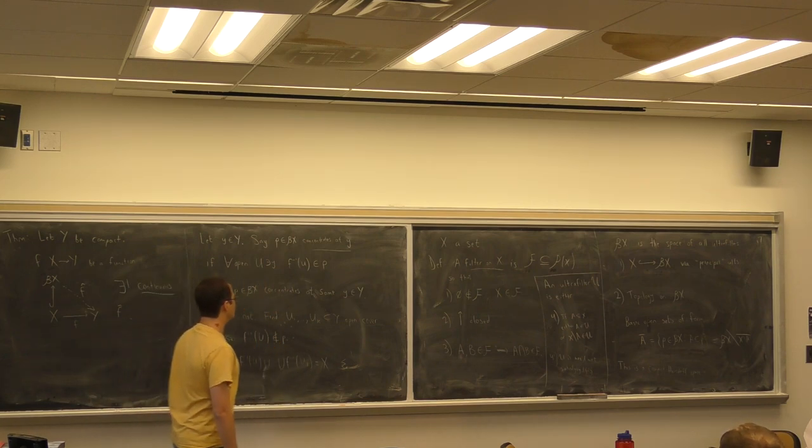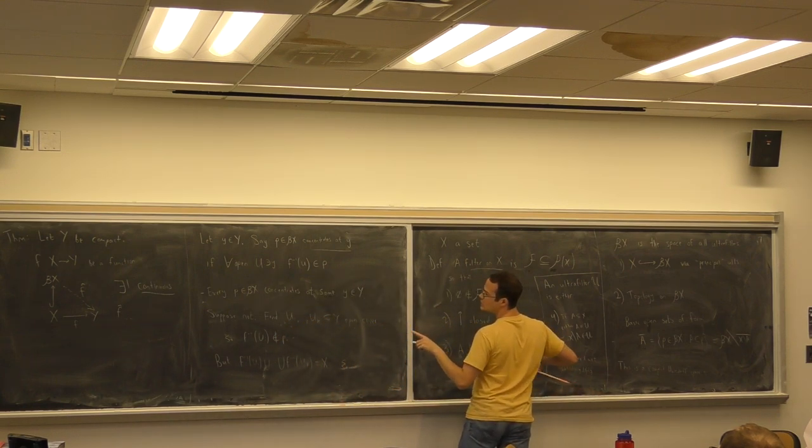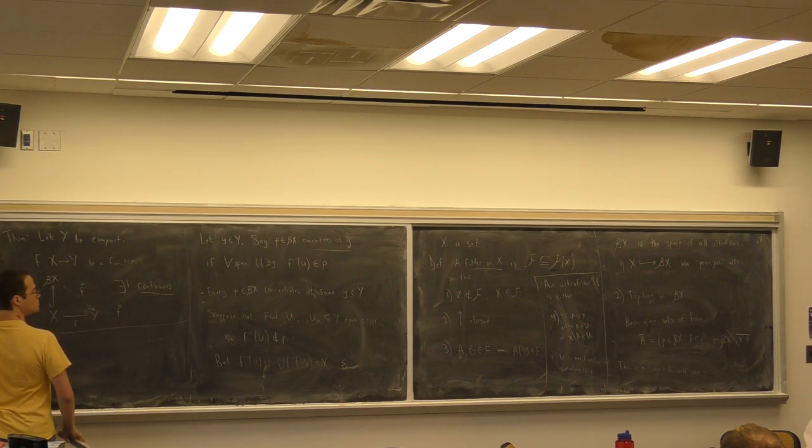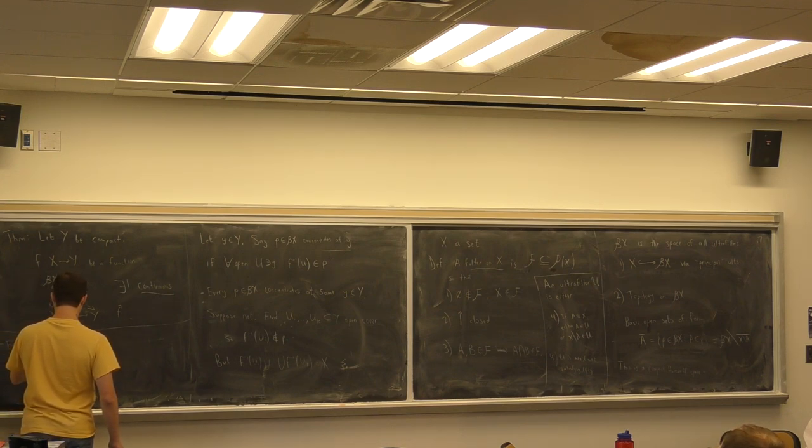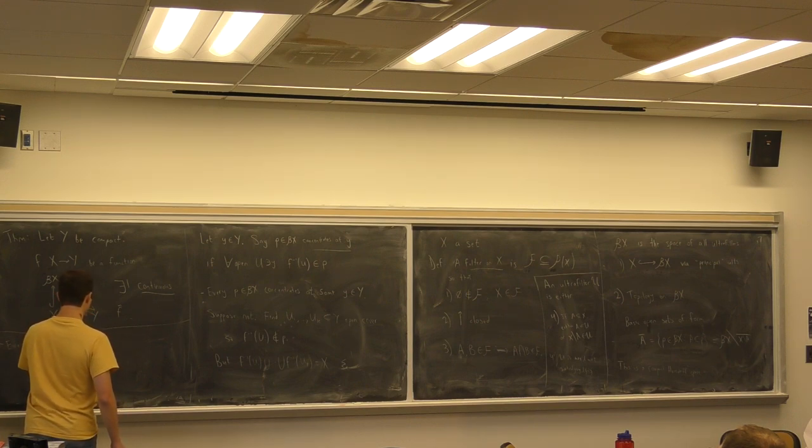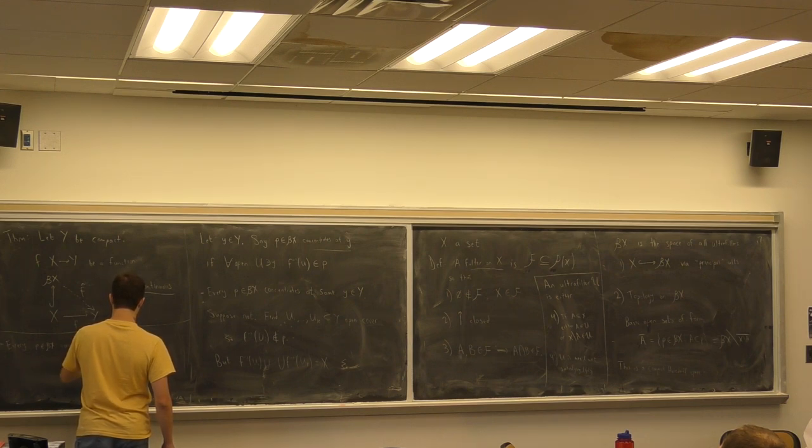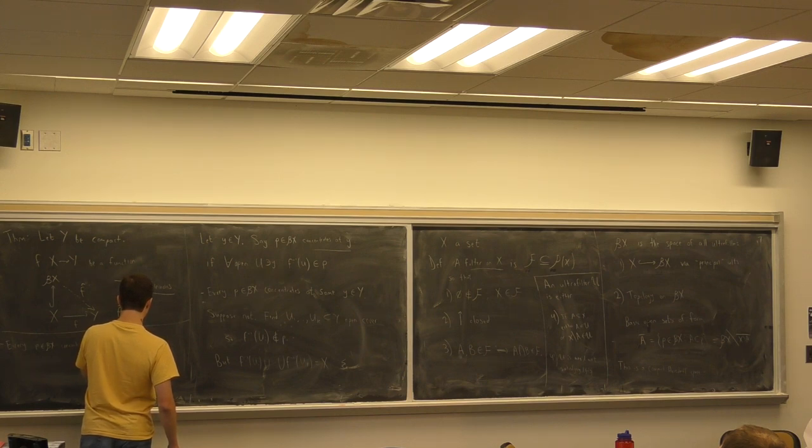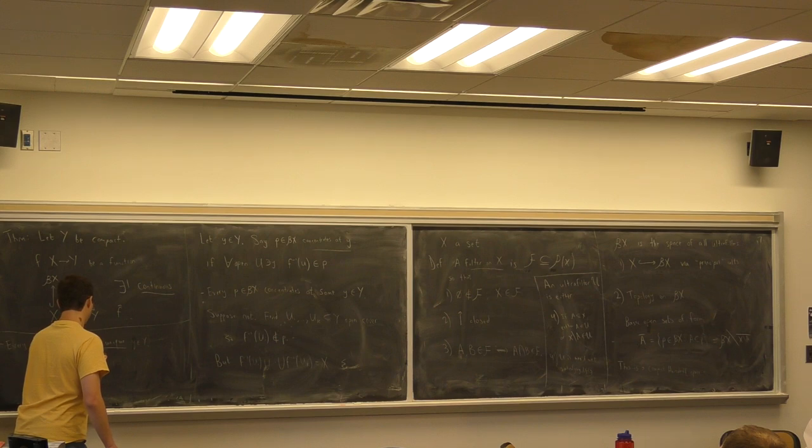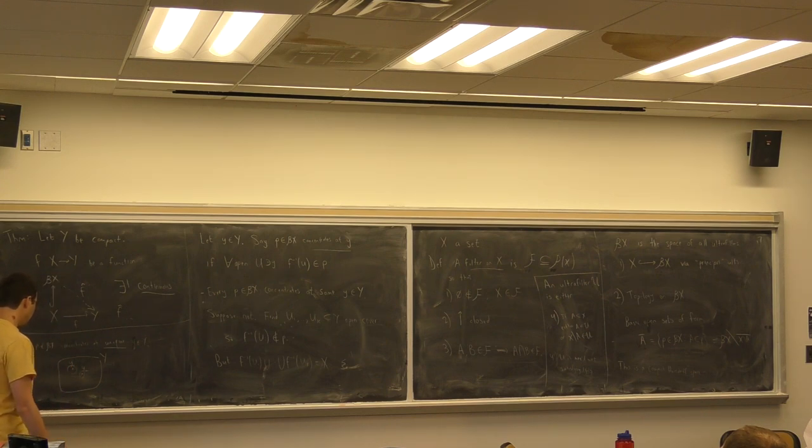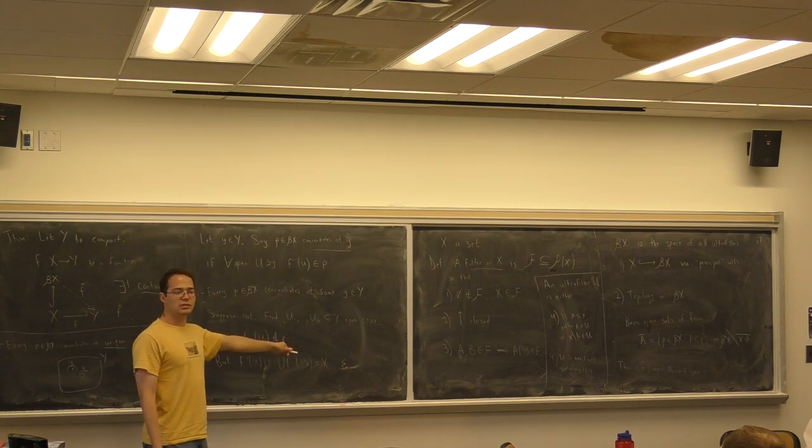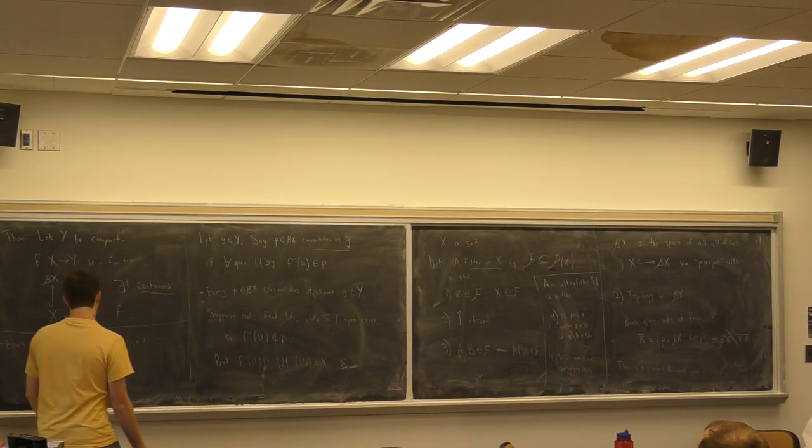And in fact, let's just improve this right away. Or, let's do it down here. Every p concentrates at a unique point y. I mean, this is really easy. Here's y. Here's two possible points, y1 and y2. If they are different, let's put little disjoint neighborhoods around them, because everything is Hausdorff. These have disjoint pre-images. And so you're never going to have disjoint things that p thinks are both large. That's bad. So that's our map.